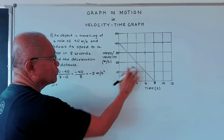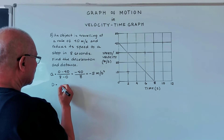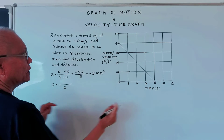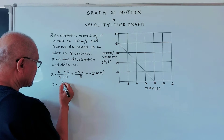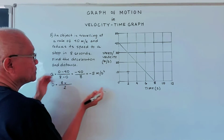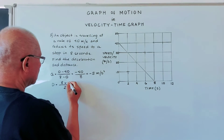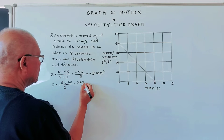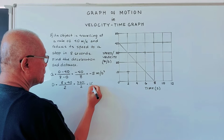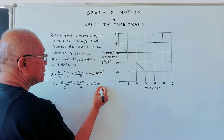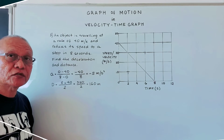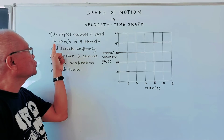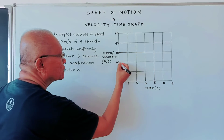Now let's find the distance. Distance is the area of the triangle under the graph. So one half times base 8 times height 40 equals 320 divided by 2, which is 160 meters.